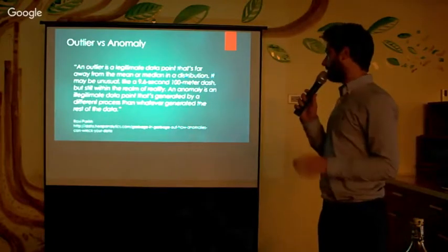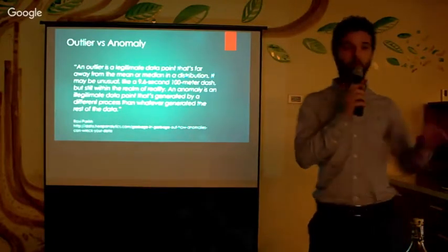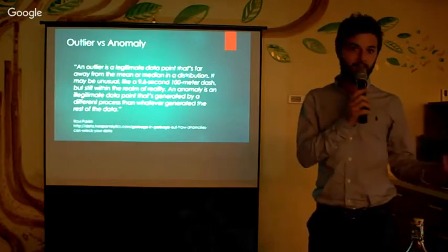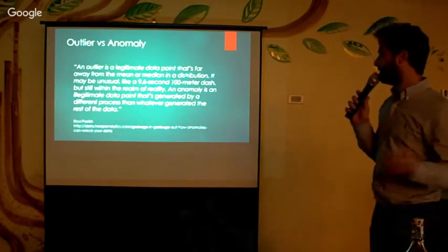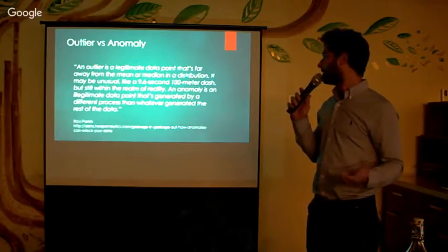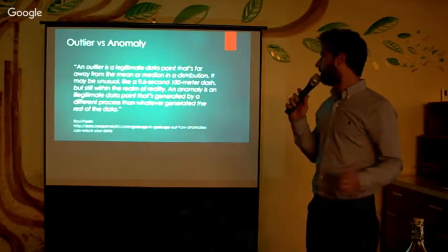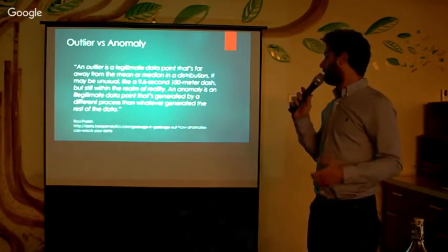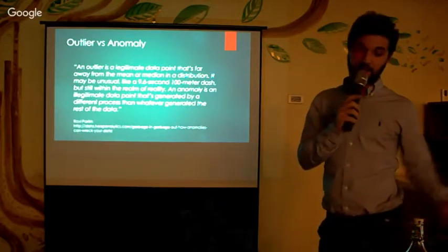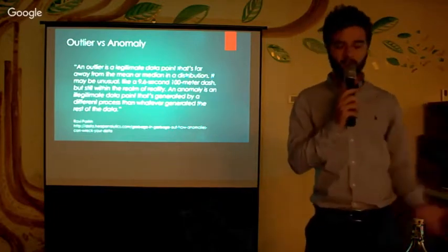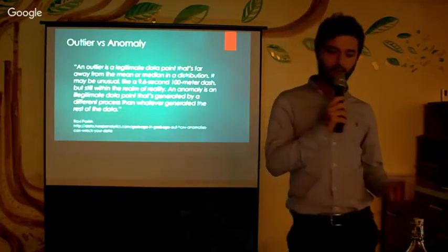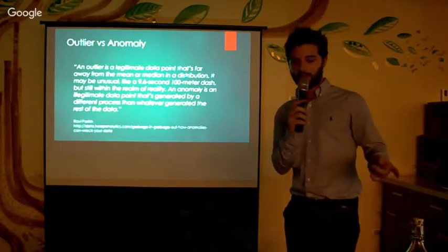Let's recap what an outlier is and what an anomaly is, because the two words seem to mean the same thing. An outlier is a legitimate data point that's far away from the mean or median of a distribution, but it may be unusual — like 9.6 seconds in a 100-meter dash — yet still within the realm of reality. An anomaly, however, is a data point that has been generated from a different process than the one that generated the rest of the data.